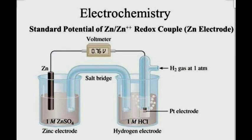Pleasant good morning to everyone. From today onwards, we are going to discuss unit nine, electrochemistry. In this lesson, we are going to discuss what is electrochemistry, what is the meaning of electrochemistry, what are the terms used in electrochemistry, how to measure the terms used in electricity, what are the theories and laws used in electrochemistry, and finally, what are the applications of electrochemistry.